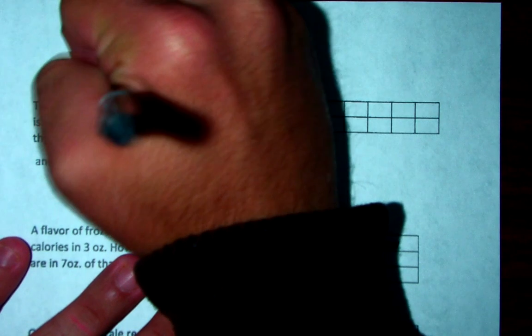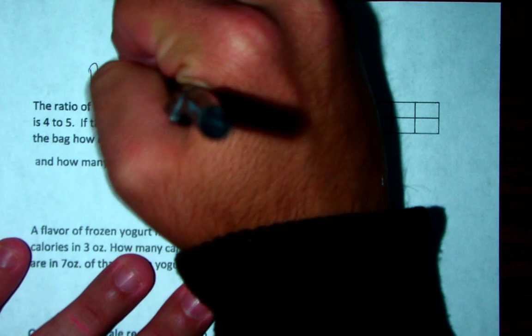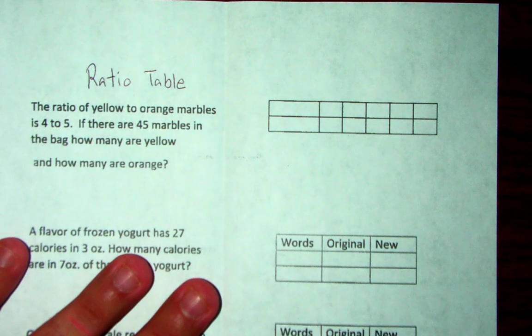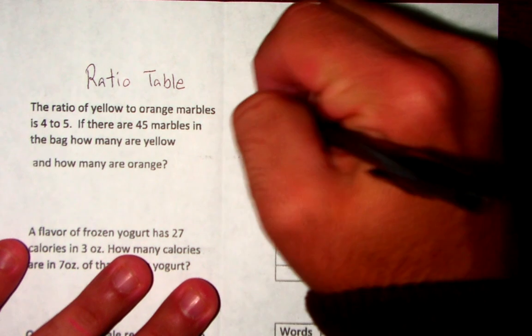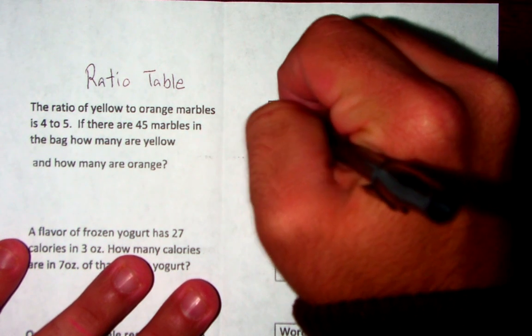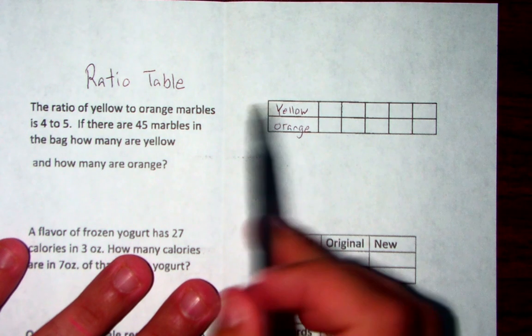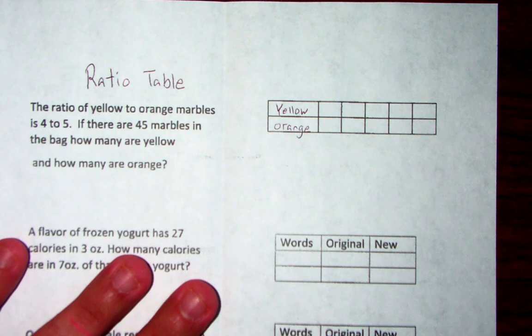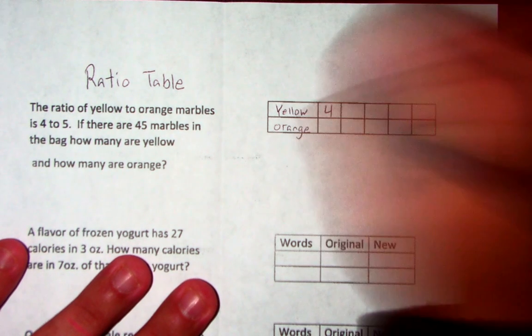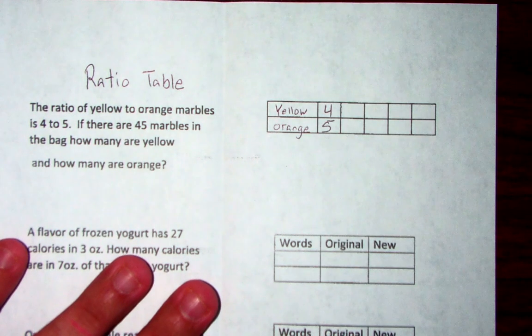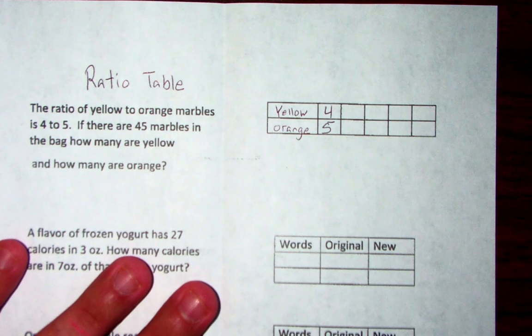I'm just going to put ratio table up top so we know what strategy we are using. The ratio of yellow to orange marbles is 4 to 5. Yellow to orange. Yellow came first, that's why it is on top. Orange came second, that's why it's on bottom. It says the ratio is 4 to 5, so for every 4 yellow there are 5 orange.